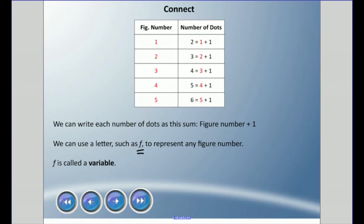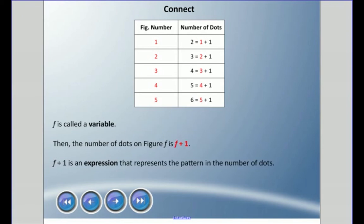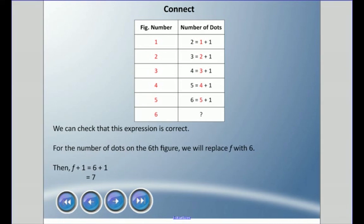We always write variables in italics — notice it's kind of slanted. We write variables in italics so they stand out more easily against numbers. For example, the letter L is always written in a handwriting style because it looks very similar to a one. So the letter F is called a variable. The number of dots in figure F is F plus one — an expression that represents the pattern. We can substitute any figure number to find the number of dots.